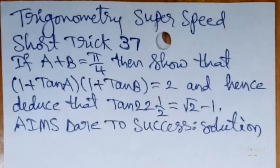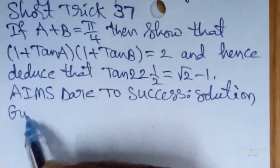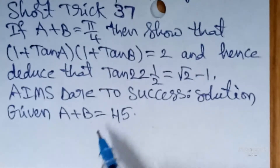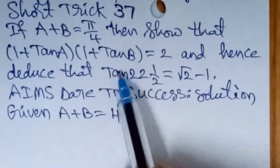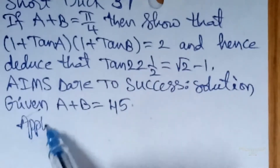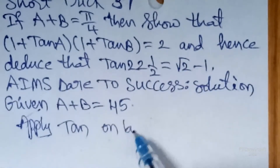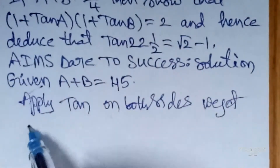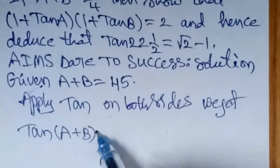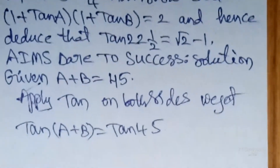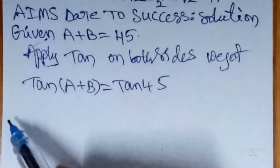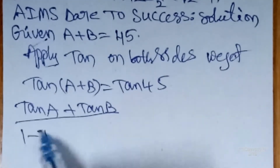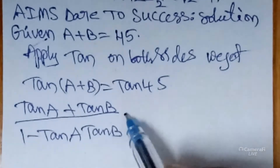Solution. The given value is a plus b equals pi by 4, and 180 by 4 is 45 degrees. So all values are in terms of tan. I apply tan on both sides. We get tan(a + b) equals tan 45. The formula is: tan(a + b) equals (tan a + tan b) divided by (1 minus tan a times tan b), and this equals 1.